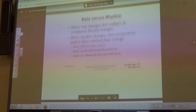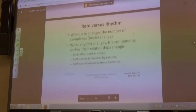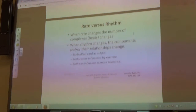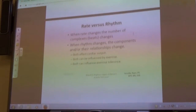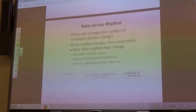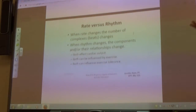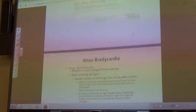In case you need a refresher: the rate is the number of complexes on the ECG in a given amount of time. The rhythm is the relationship of the complex parts to each other. The rhythm affects your cardiac output and can be influenced by exercise — well, both rate and rhythm can be influenced by exercise — but rhythm has a big part to play in what your cardiac output is doing.